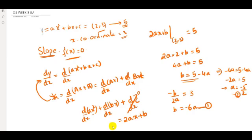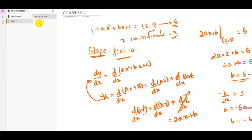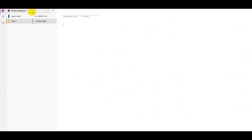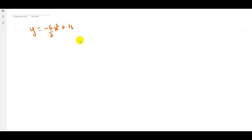Substituting a = −5/2 back into b = −6a: b = −6 × (−5/2) = 15. So b = 15. Now substituting the values of a and b into y = ax² + bx + c, we get y = (−5/2)x² + 15x + c.